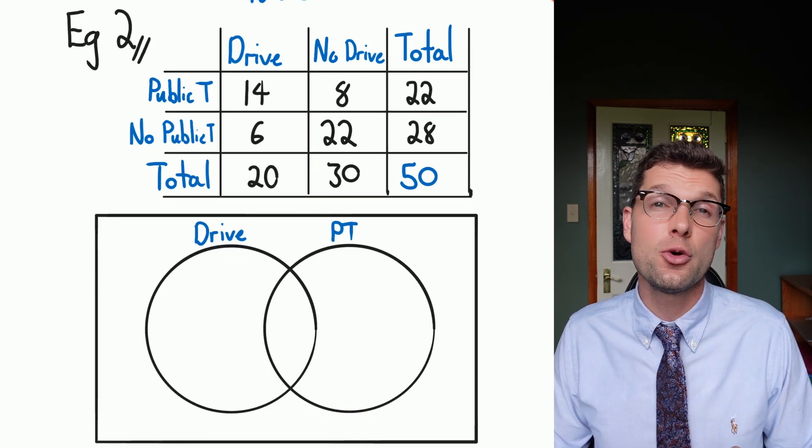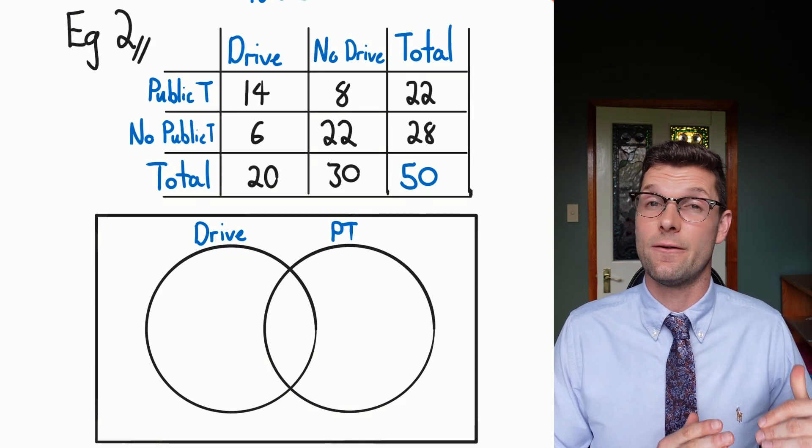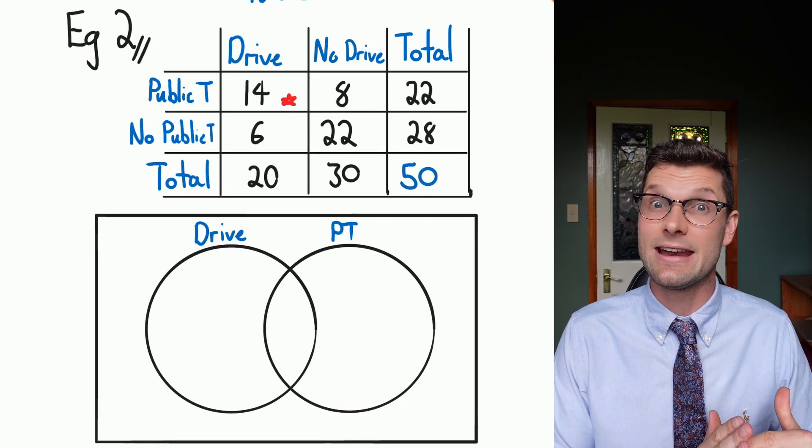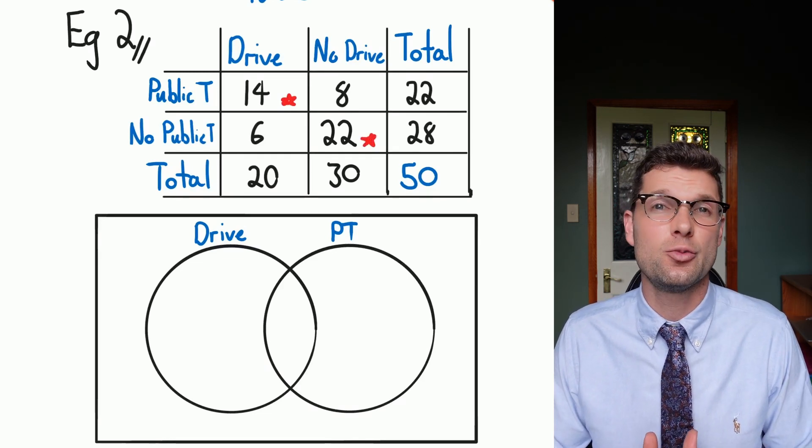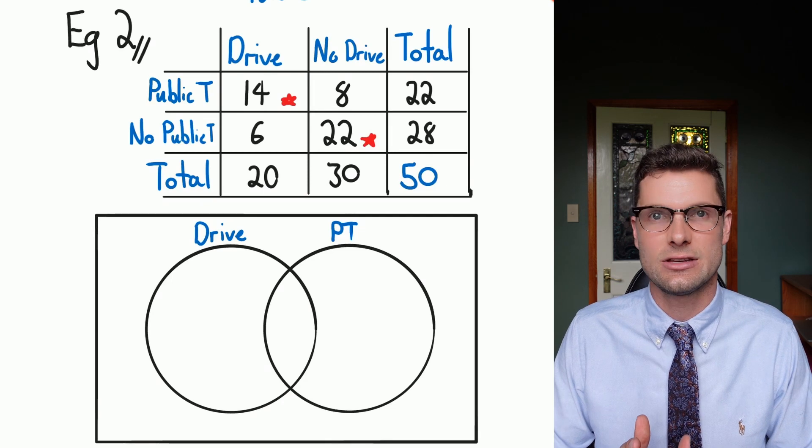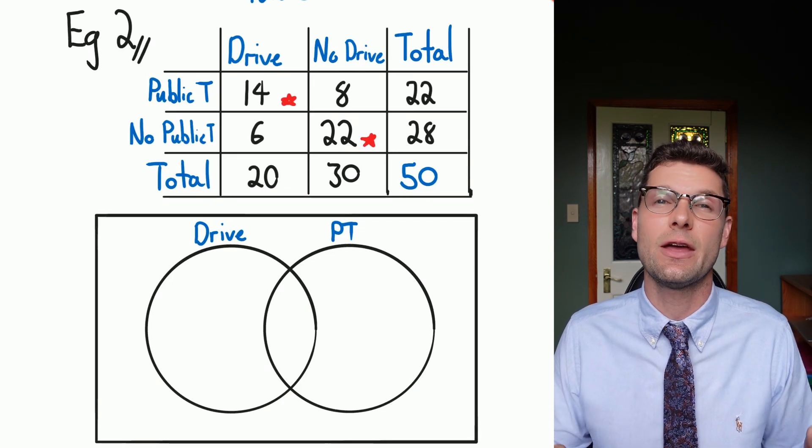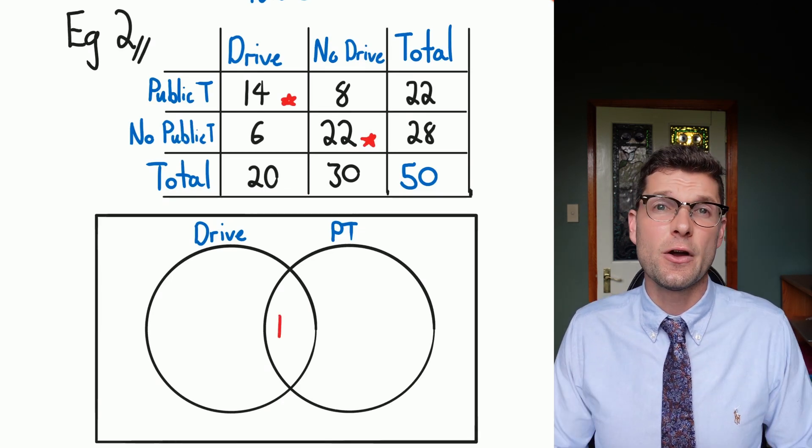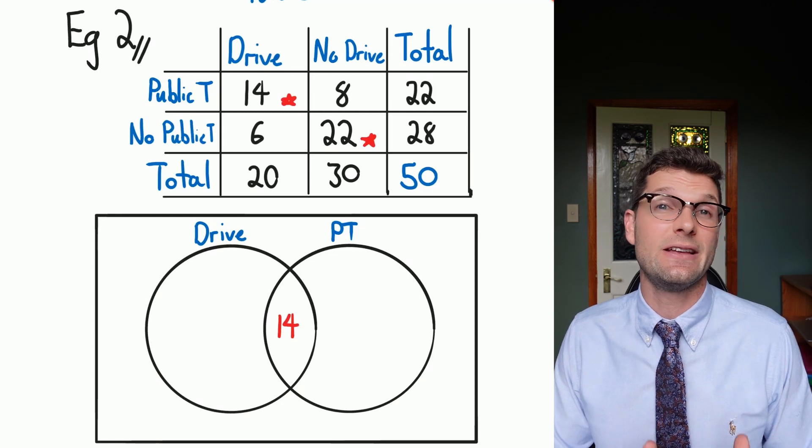So for these ones the two important numbers that we've got are the 14 people that drive and take public transport, and the 22 people that don't drive and don't take public transport. Because we can put them in straight away. So the first thing I'm going to do is put those 14 people in the intersection.